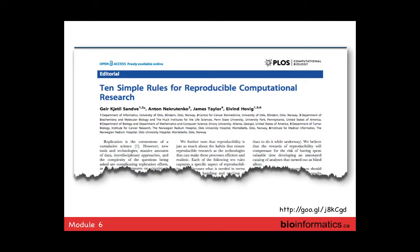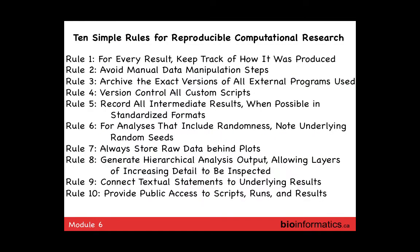A more recent and quite good paper is from James, Anton, and colleagues in the Galaxy community — a PLOS Computational Biology paper on '10 Simple Rules for Reproducibility in Computational Research.' A quick summary of these rules: for every result, keep track of how it was produced; avoid manual data manipulation steps; archive the exact versions of all external programs used; version control all custom scripts; record intermediate results when possible in a standard format.